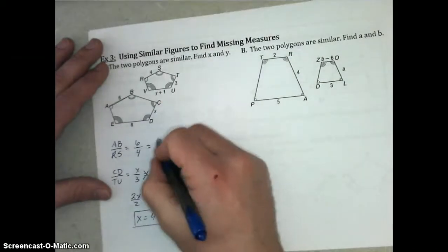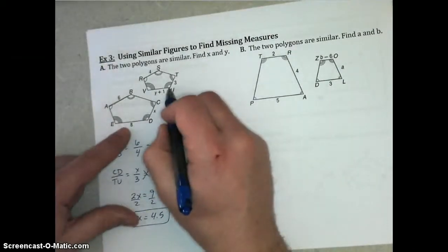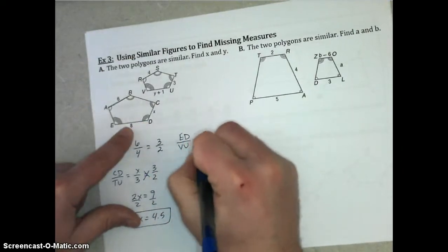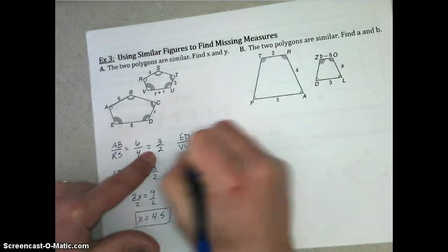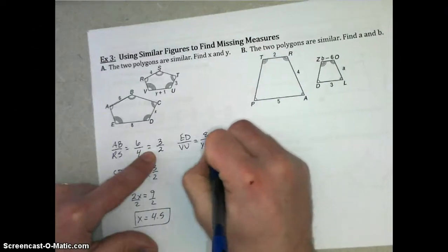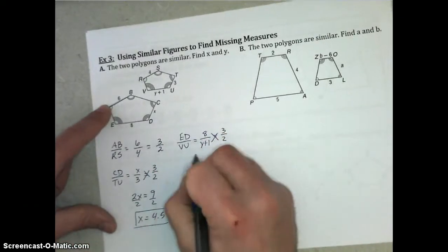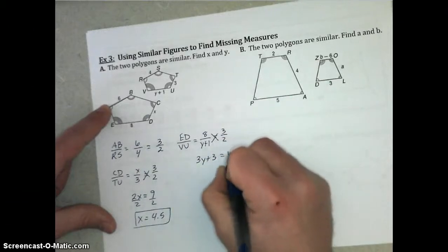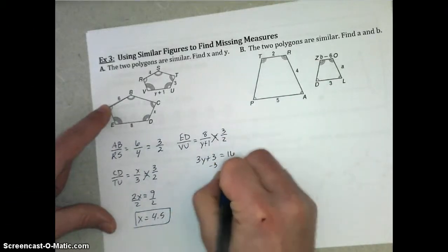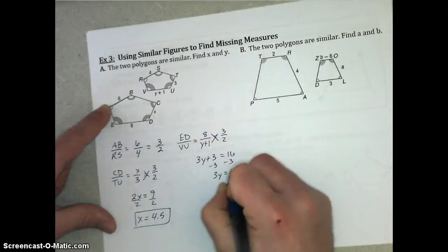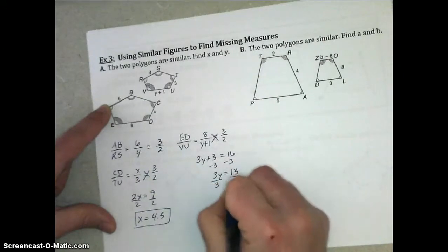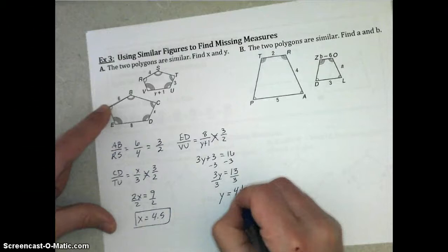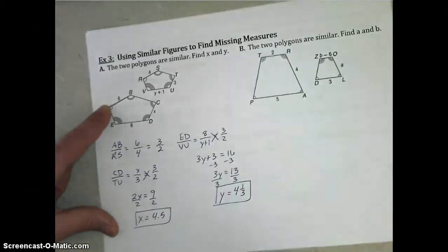To find Y, we're going to use this same ratio, but we're going to compare this VU side to ED. So, we're going to use ED over VU to get 8 over Y plus 1. And that should equal the same similarity ratio of 3 to 2. So, again, cross multiply, but don't forget to distribute 3 to Y and 1, and that would equal 8 times 2, which is 16. And when we solve this for Y, we get 3Y equals 13. And if we divide by 3, Y is either 13 thirds or 4 and 1 third or 4.3 repeating. I'd rather just leave it as 4 and 1 third. That's more exact.